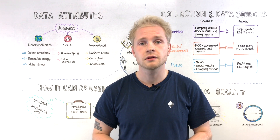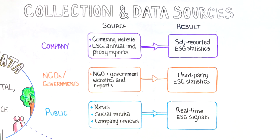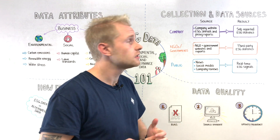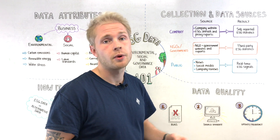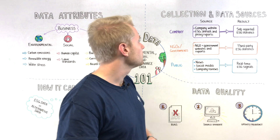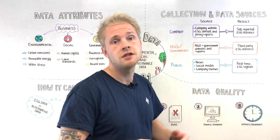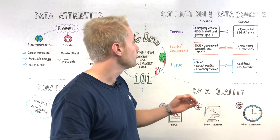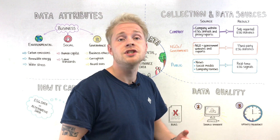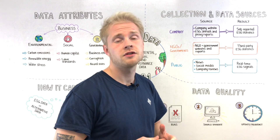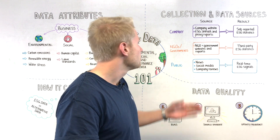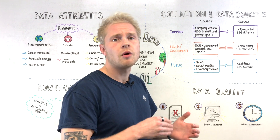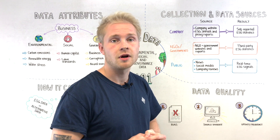How does data production look in terms of technicalities? Companies already have a lot of information available on their websites and in their ESG annual and proxy reports. Information collected directly from company resources will lead to self-reported ESG performance statistics. Similar information can be drawn from reports and websites provided by NGOs and governments. Alternative data sources for ESG data may include financial news, social media, as well as company reviews, which offer more recent insights on the ESG performance of a given company.